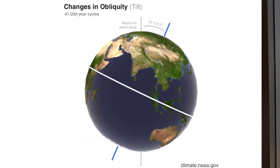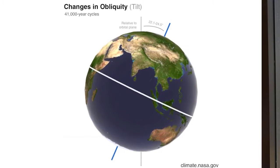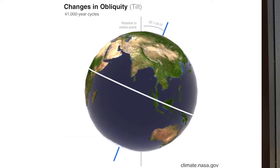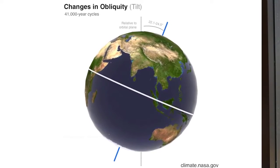Obliquity is the reason why Earth has seasons. The greater the Earth's axial tilt, the more extreme our seasons become, as each hemisphere receives more solar radiation during its summer when tilted towards the Sun, and less radiation during the winter when it is tilted away.